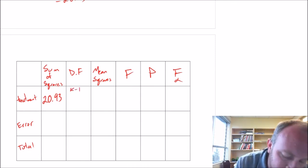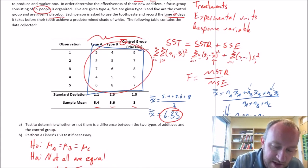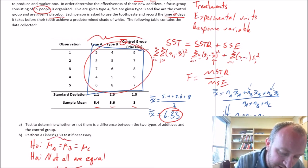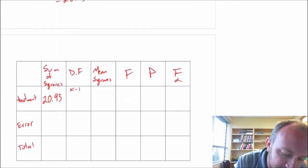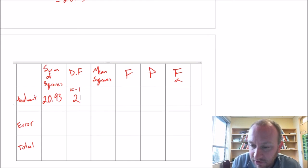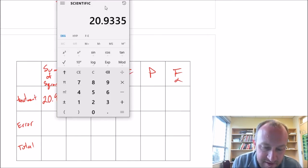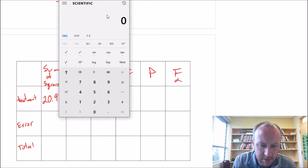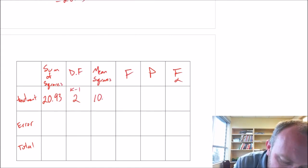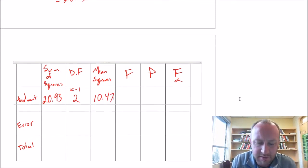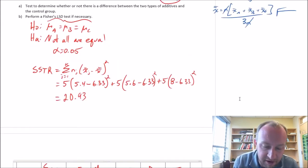So I come down to my table and we'll fill this in: 20.93. Degrees of freedom on treatment - this is K minus 1. We have 3 treatments: type A, type B, and the control group, so 3 minus 1 is 2. Finally, mean squares for treatment is simply SSTR divided by 2, which is 10.47.